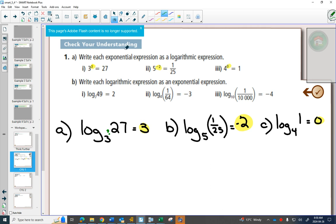So, log 3 of 27 is 3. If I put a little question mark here, and I put that negative 2 where that question mark is, does that expression make sense? And if I put a little question mark here, and I think of that 0 going in there, is 4 to the 0, 1? Yes.